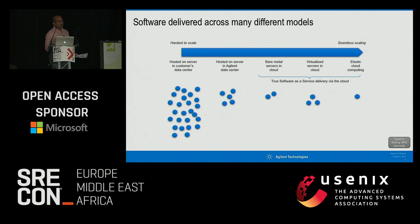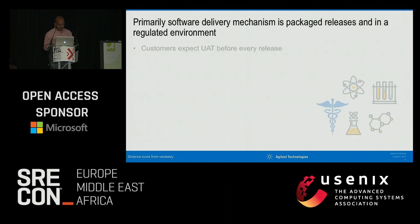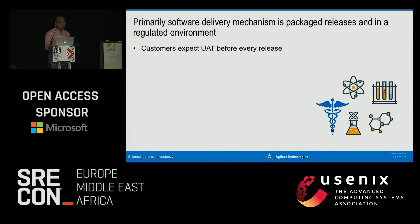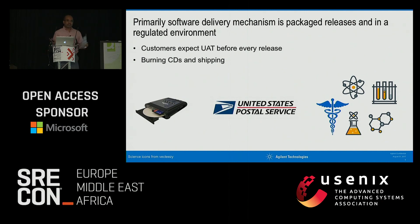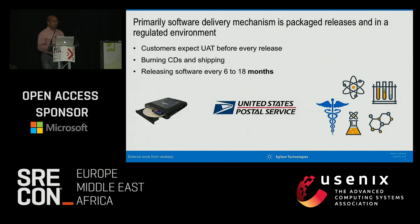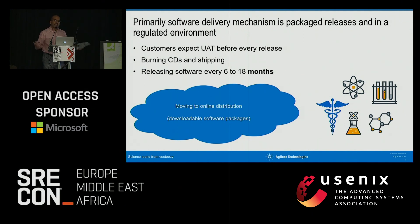A lot of our software is released in a very regulated environment with very long release cycles — and today we're still burning CDs and shipping them to customers. In this environment we're releasing software every six to eighteen months from the desktop perspective, and just now we're starting to move to an online distribution model. This seems like 1990s technology but that's the kind of migration we're going through, alongside our customers who are in similar situations.